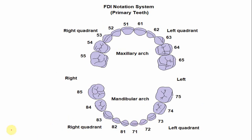In the FDI notation system, also known as the two-digit system, it is 7-2 for the left mandibular lateral incisor — 7 indicates the left mandibular quadrant and 2 is the tooth number. For the right side, 8 indicates the right mandibular quadrant and 2 is the tooth number, so it is pronounced as 8-2 for the right mandibular lateral incisor.